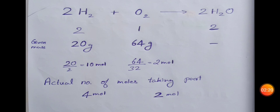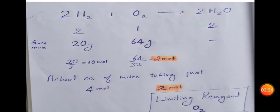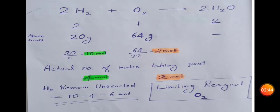This is the actual number of moles taking part in the reaction: 2 moles oxygen and 4 moles hydrogen. Now, if we have 2 moles oxygen, the reaction will proceed. The limiting reagent — oxygen — is completely consumed. 4 moles of hydrogen react, and hydrogen is done.